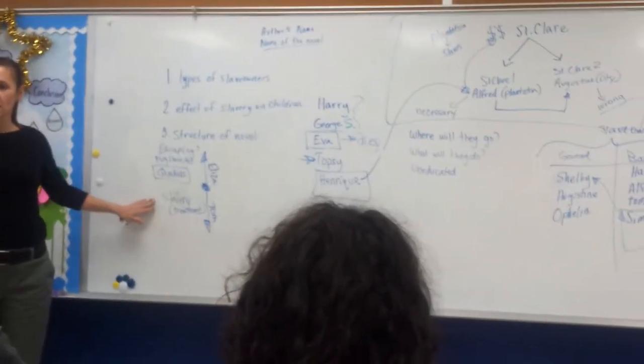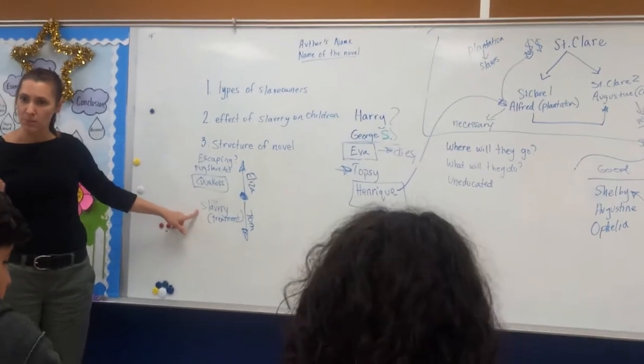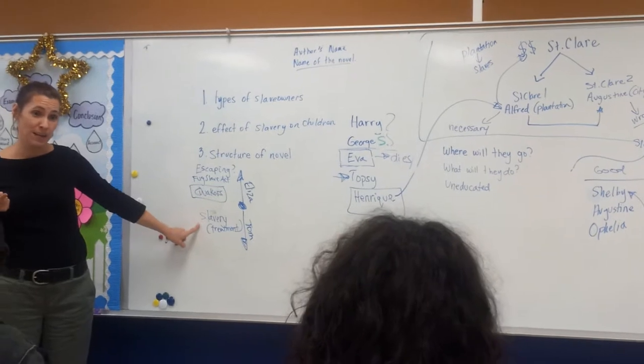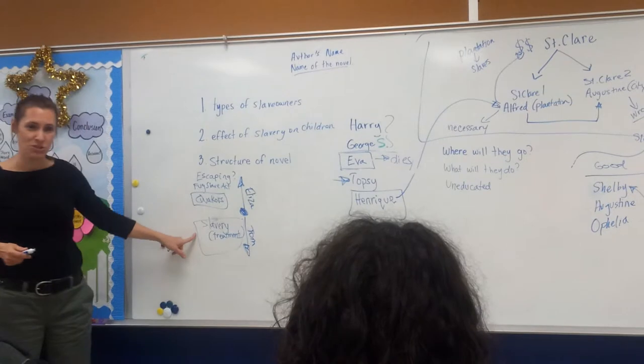So if you think about that, Tom sees this. What about the mom who jumps off the ship? What about what Tom experiences once he gets to Simon LeGree's? So through Tom, you see everything related to how slaves are treated.